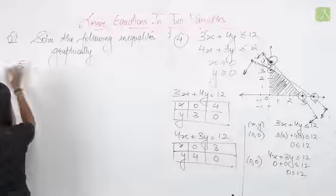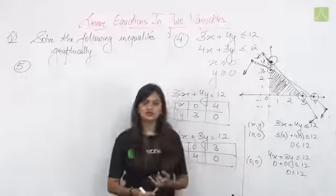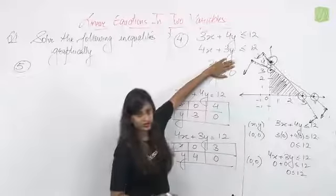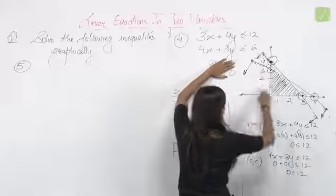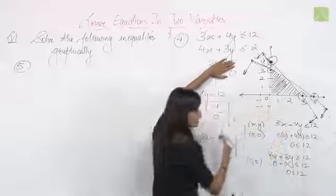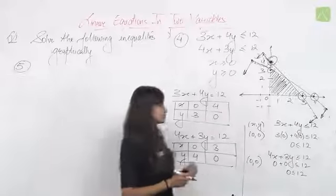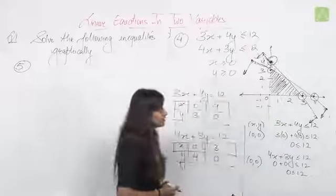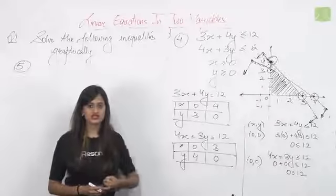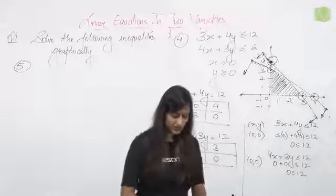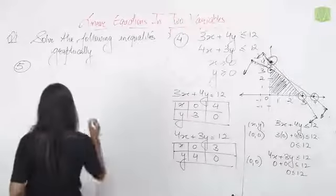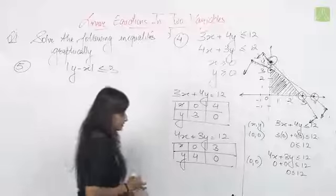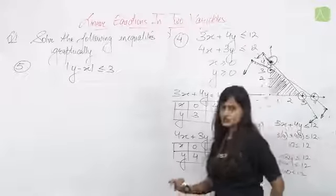We have now learned to solve inequalities with one variable, two variables, and systems of multiple equations. Even if four equations are given, we can shade accordingly. Now the last part involves an equation in modulus form: |y − x| ≤ 3. Let's understand the modulus concept briefly.